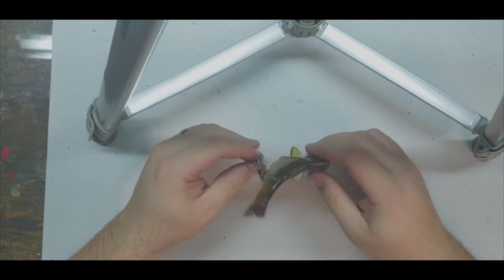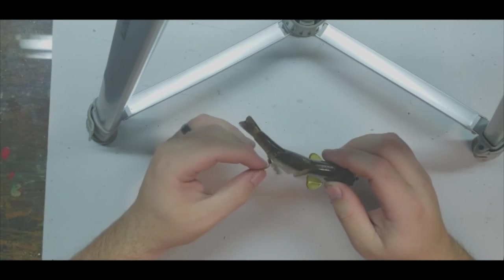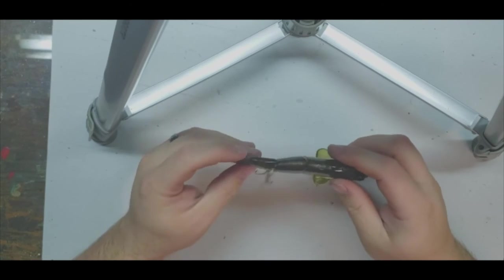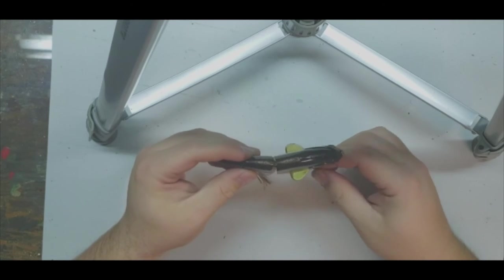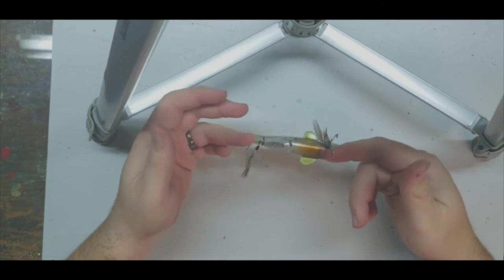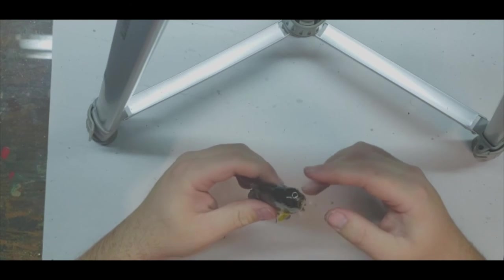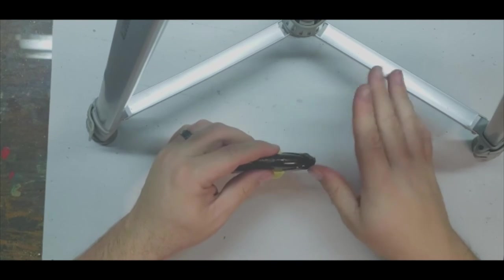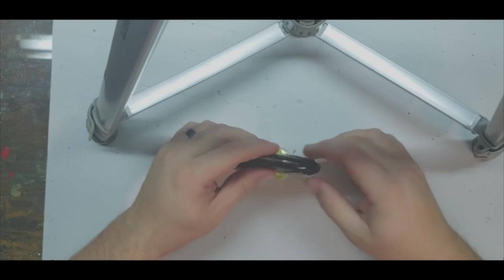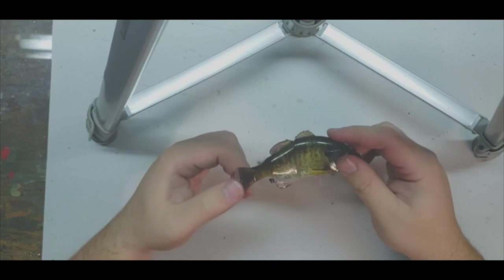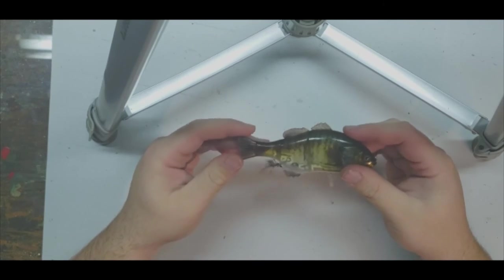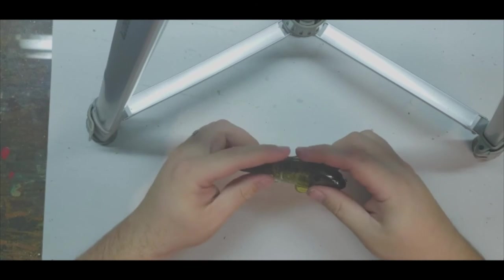The only problem with fishing this into a bed is if there's any wood laid down around it or thick vegetation, these treble hooks are just going to get stuck. And you're going to scare that whole bed out.